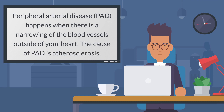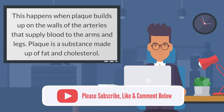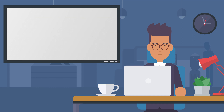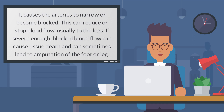Peripheral arterial disease, PAD, happens when there is a narrowing of the blood vessels outside of your heart. The cause of PAD is atherosclerosis. This happens when plaque builds up on the walls of the arteries that supply blood to the arms and legs. Plaque is a substance made up of fat and cholesterol. It causes the arteries to narrow or become blocked, which can reduce or stop blood flow, usually to the legs.